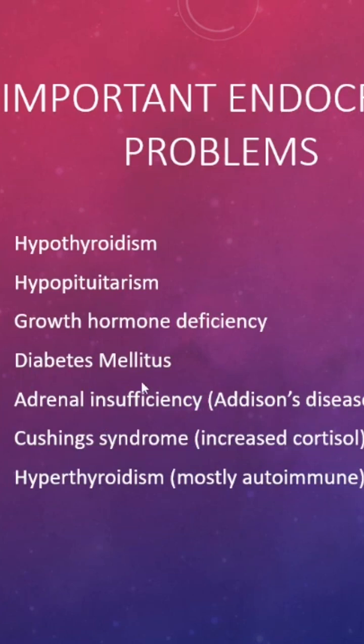When adrenal insufficiency is acquired, it is called Addison's disease. We also have congenital forms such as congenital adrenal hyperplasia, where there is abnormal hormone production due to enzyme defects. Cushing syndrome is where there is increased cortisol.